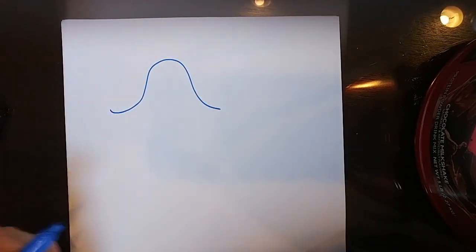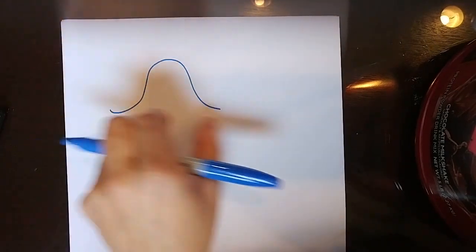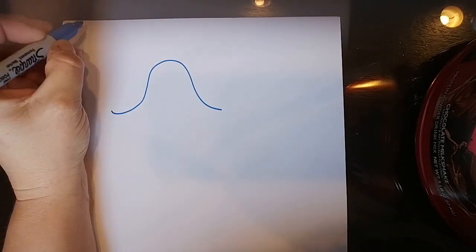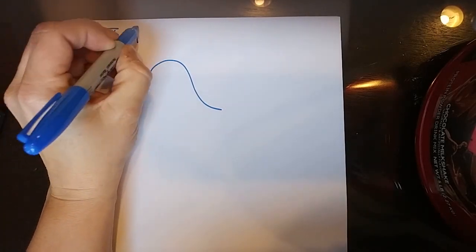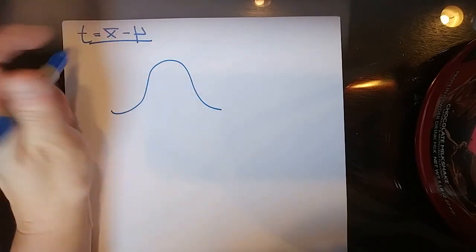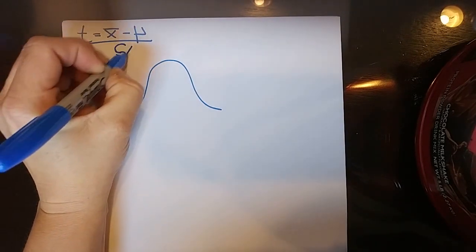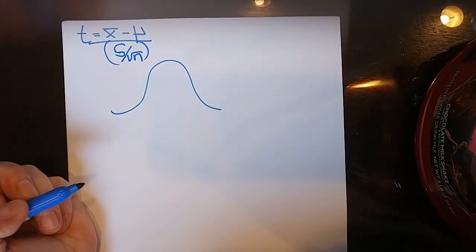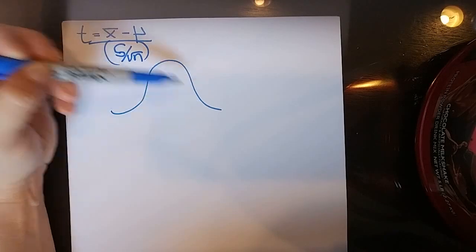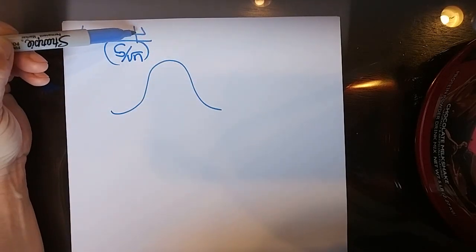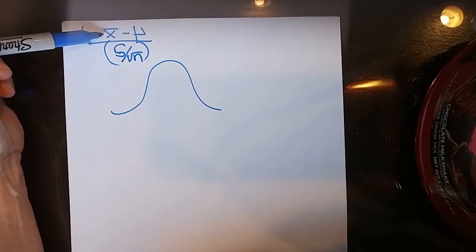Let's see if I can explain ANOVA based on what we already remember about the t-test. Remember when we were doing a sample t, we had a distribution, and then we looked to see where our sample fell in this known distribution. We used the equation: the sample mean minus mu divided by the standard error of the mean. The pattern for the t-test was: we took the sample mean, subtract what we thought it might be, divided by the standard deviation of whatever this is.